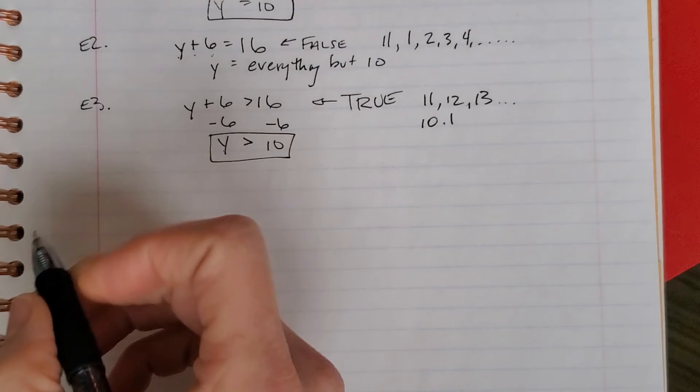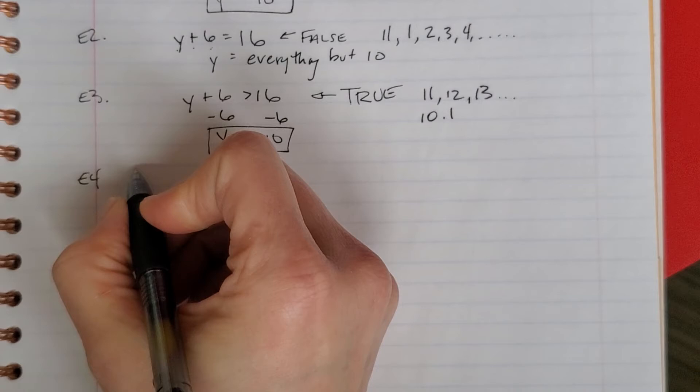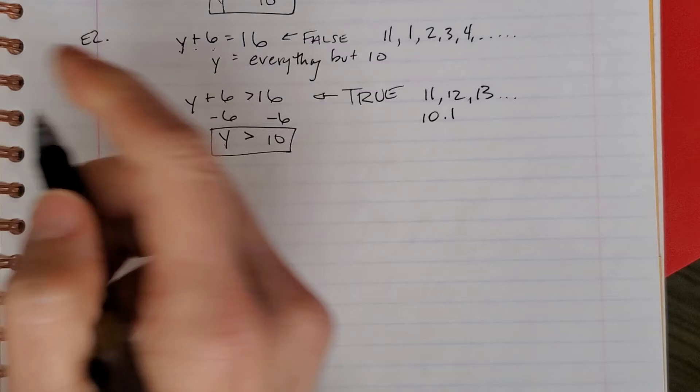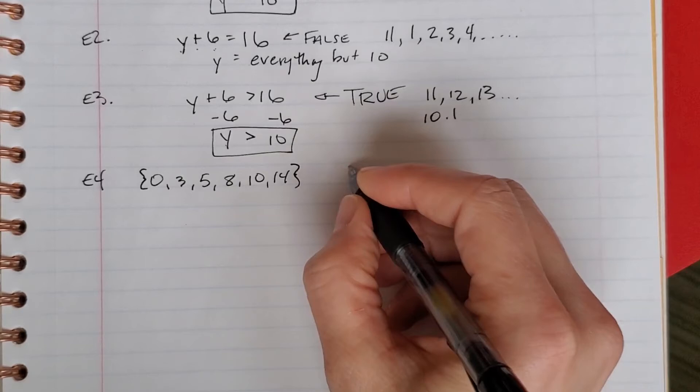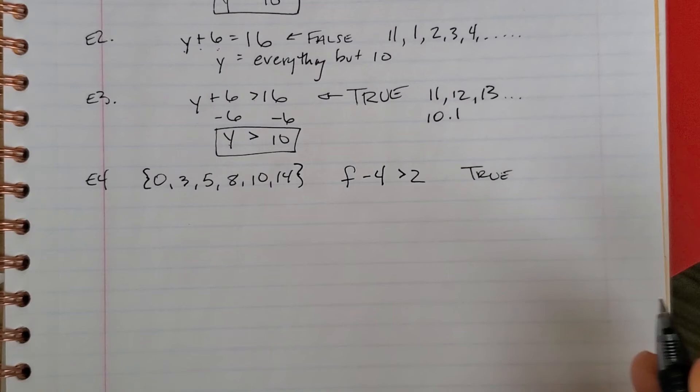Now, sometimes they're going to get a little tricky, and they're going to give you a list of numbers, and they're going to put it in these funny curly brackets. So if I said, out of this list of numbers, which ones of these make f minus 4 is greater than 2 true?